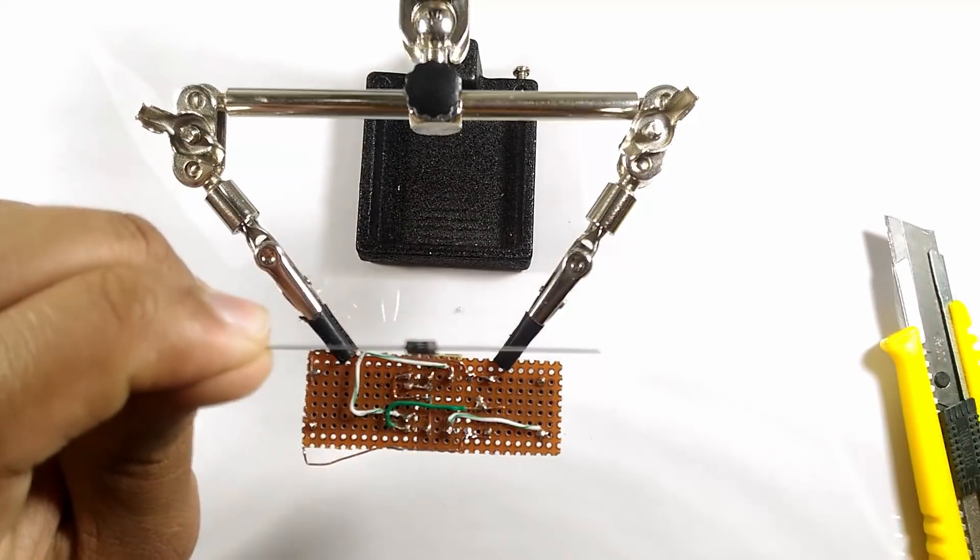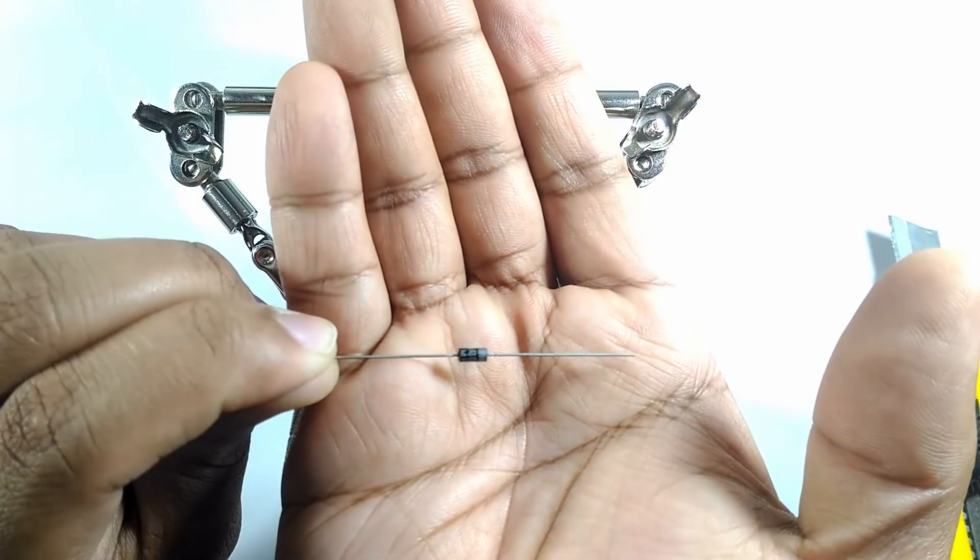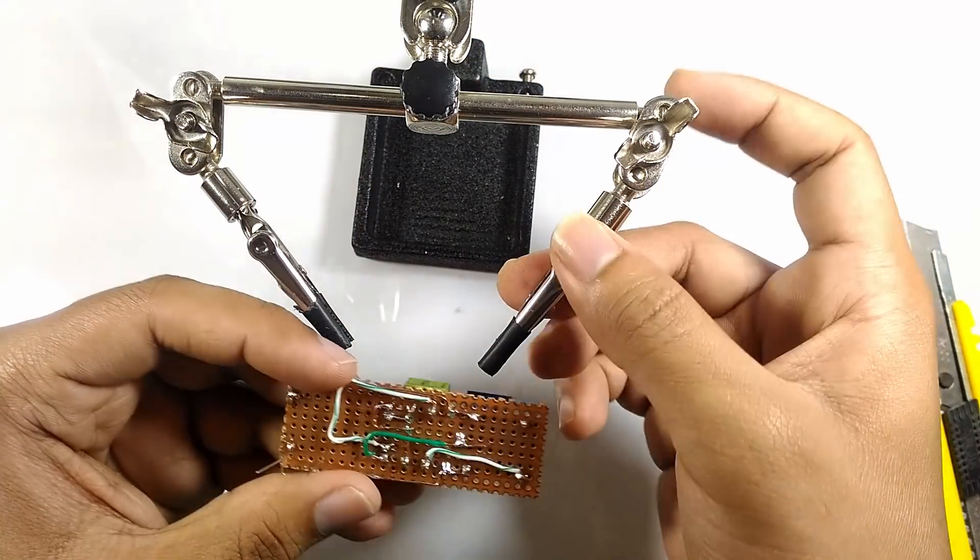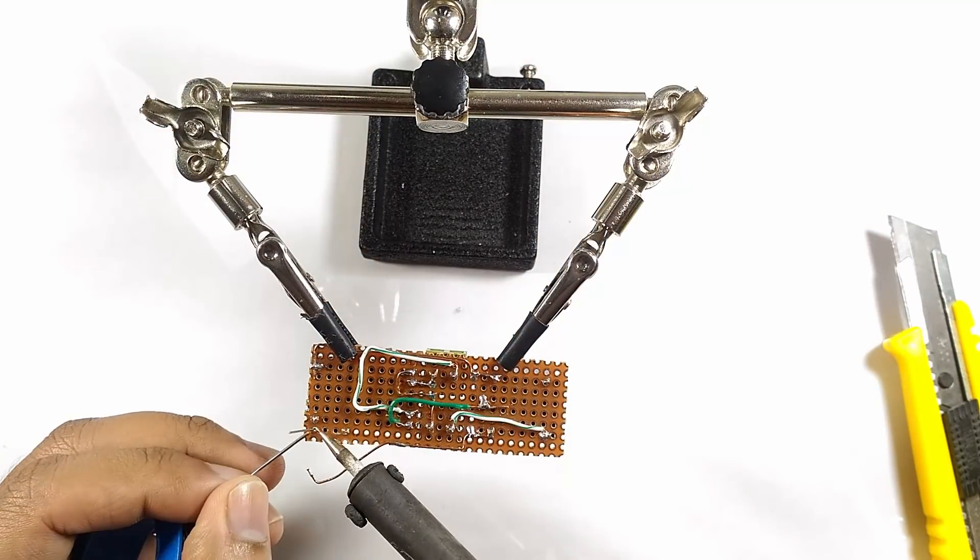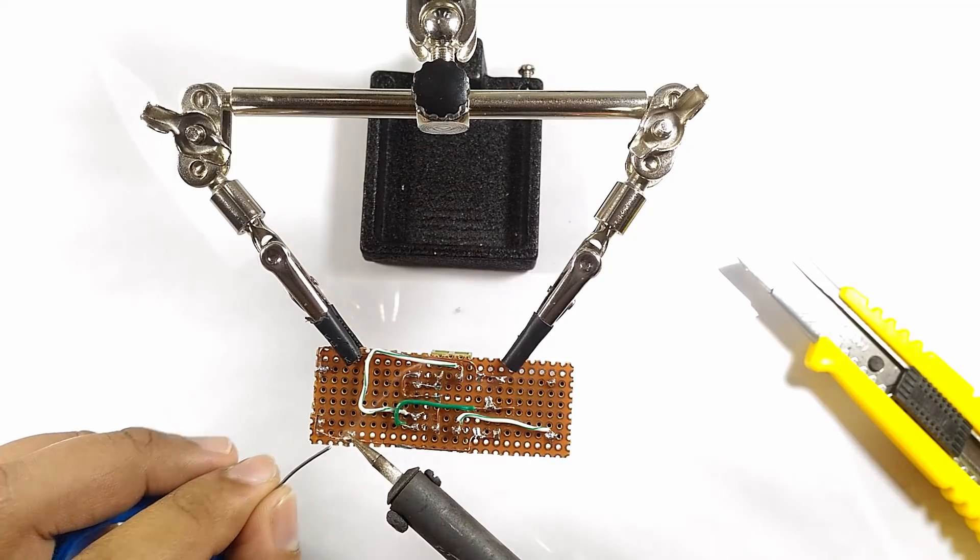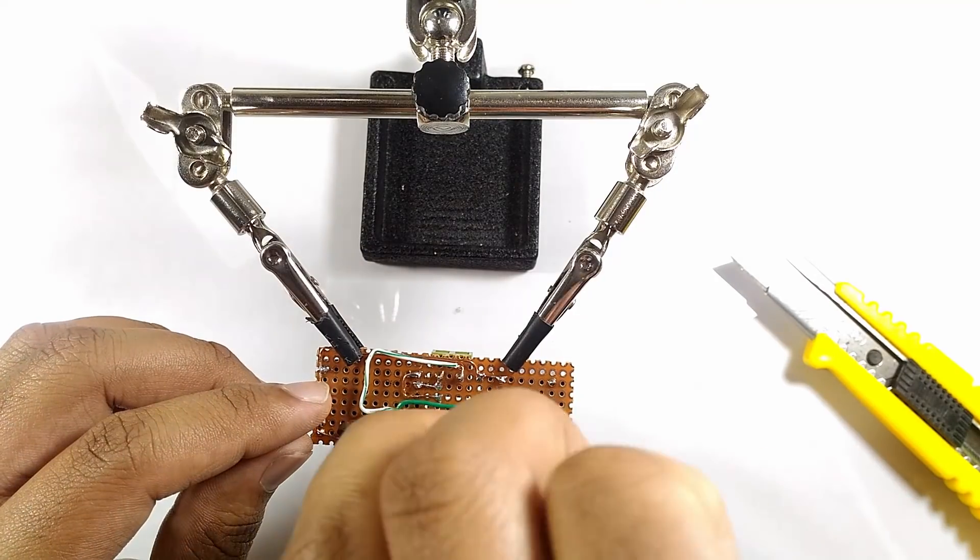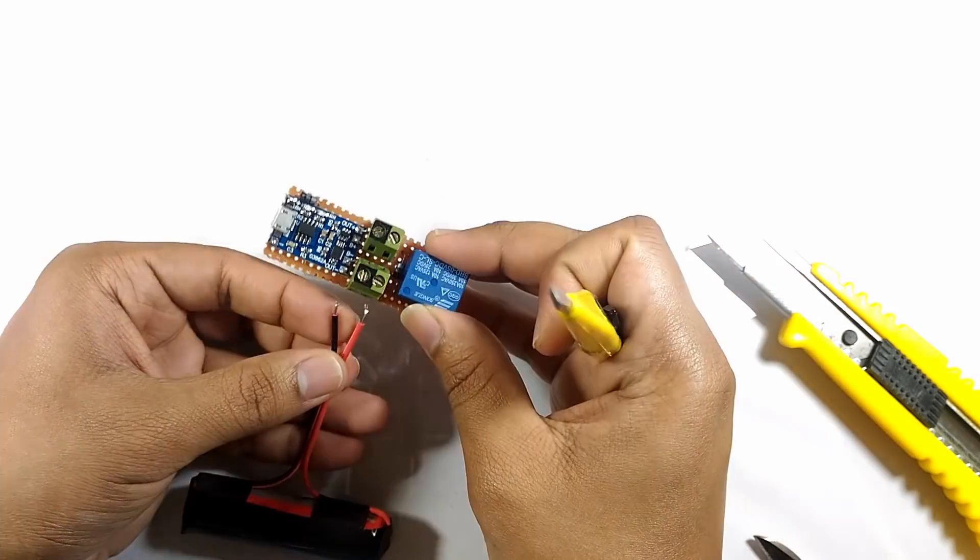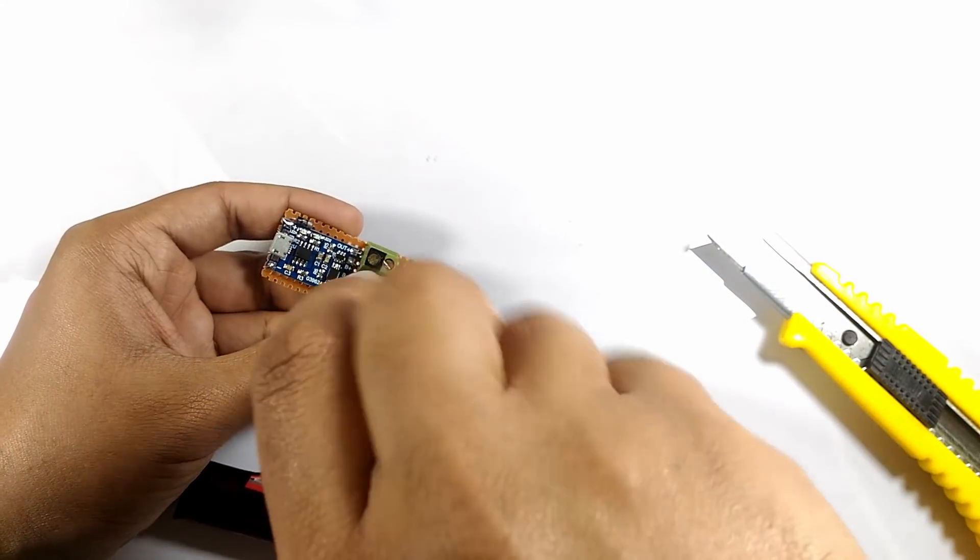So I added a diode between the positive of the TP4056 input and the relay. After I tested it out again, everything worked as planned.